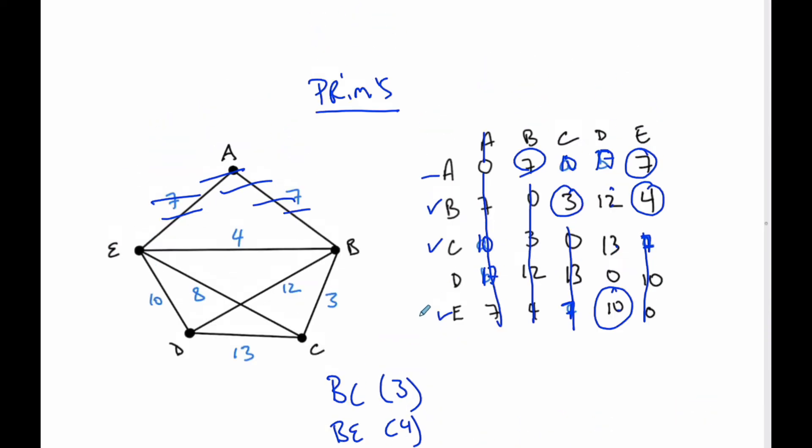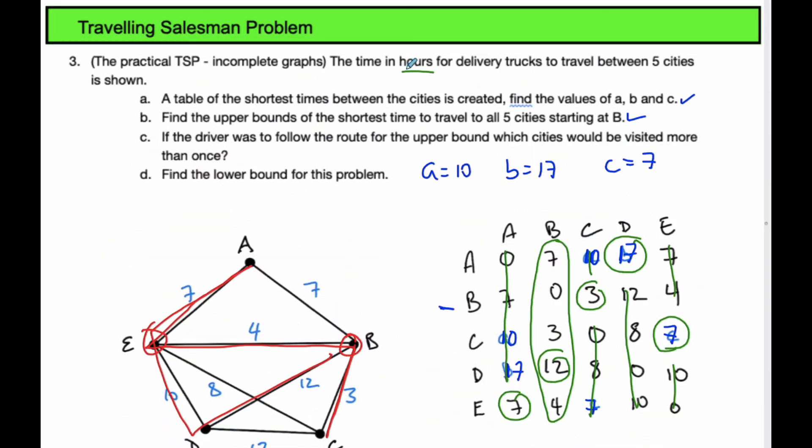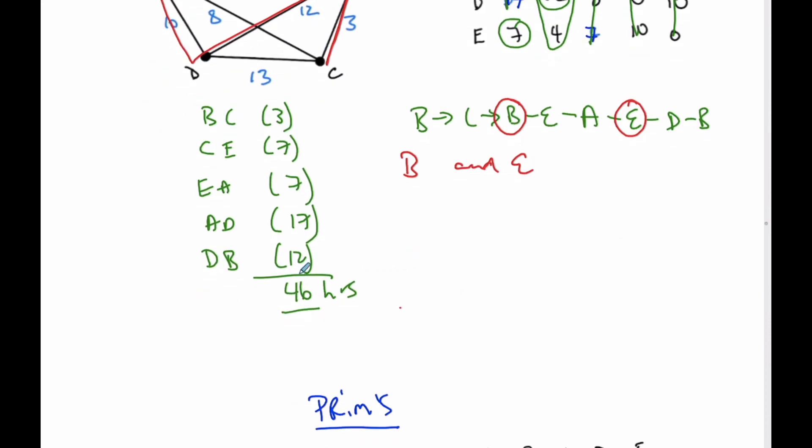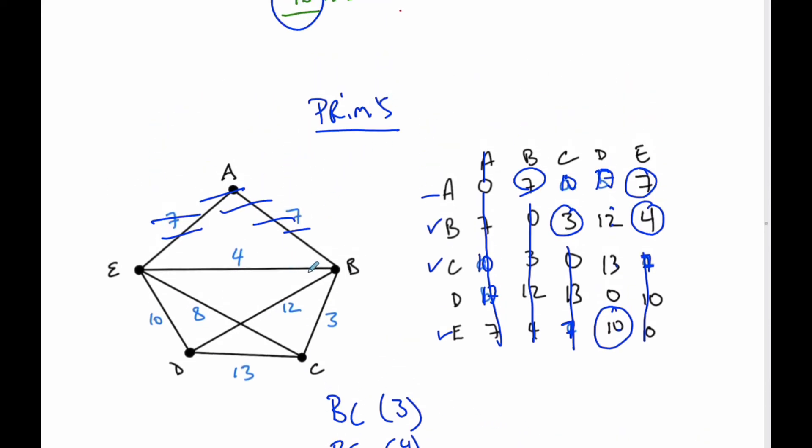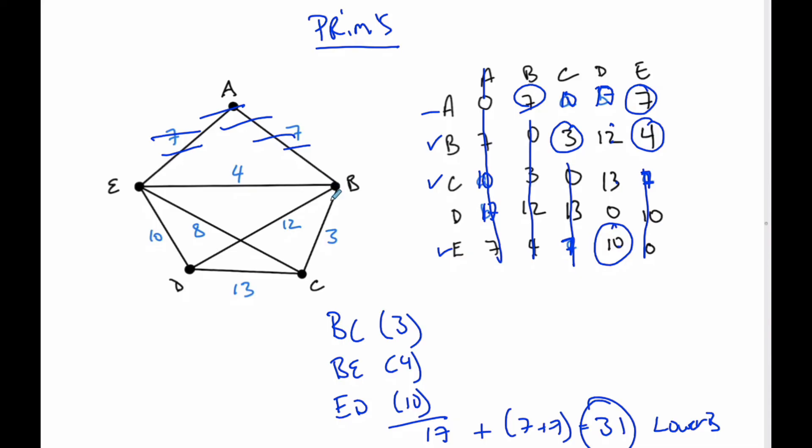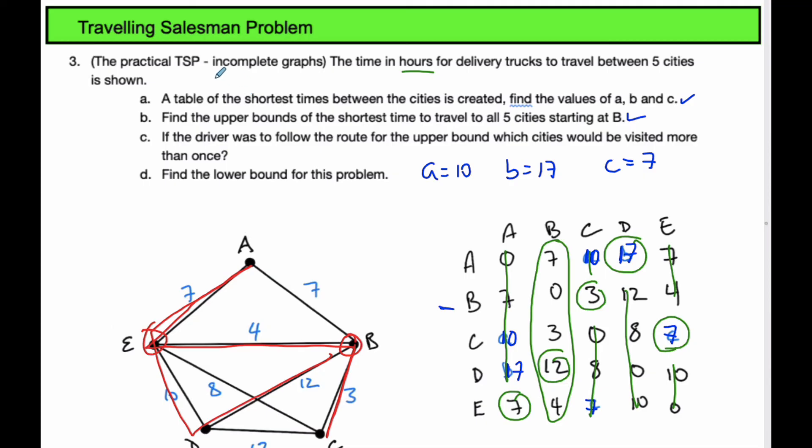17 and 14 is 31, which is my lower bound. So the shortest time for the delivery truck is going to be between 46 hours and 31 hours. We could do this with the graph as well, but I used the table here. So we have the incomplete graph, which we make into a complete graph by using the table, and we go through the nearest neighbor algorithm and the delete vertex algorithm to find our boundaries for the actual shortest delivery time.